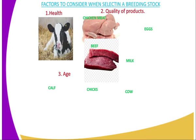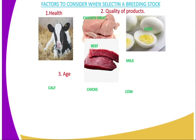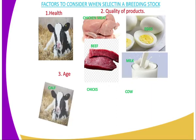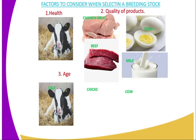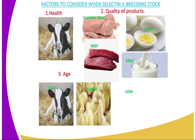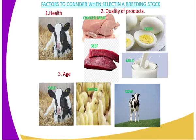The second factor is quality of product. As you can see — beef, chicken meat, eggs and milk — they are supposed to be of high quality. Third is age: animals selected should be young because a young animal has a longer reproductive life. For example, with a cow, you can select one that has not given birth more than three times, so they will have a longer reproductive life.